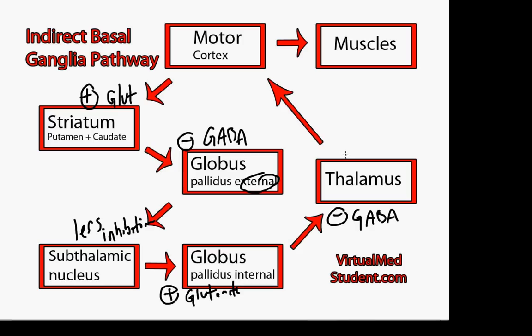So that means there's going to be decreased excitatory flow, decreased excitatory messages from the thalamus to the motor cortex. Therefore, the motor cortex basically gets dampened down, and it will not send signals for movement to the spinal cord and ultimately to the muscles. So the end result is that you get less movement.